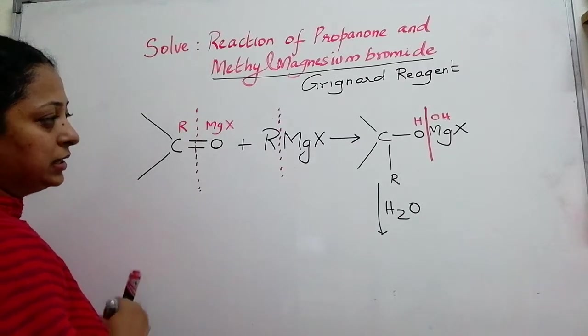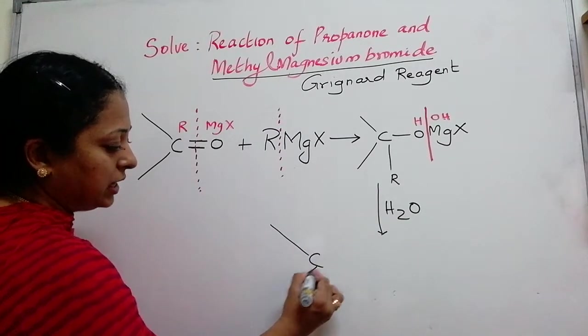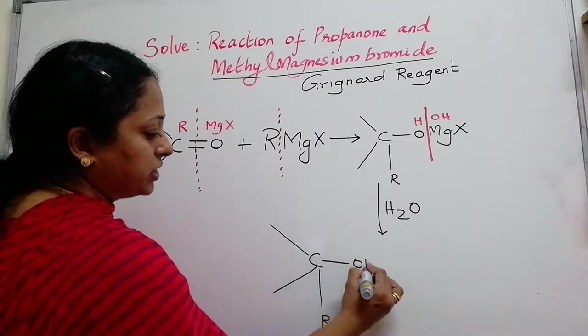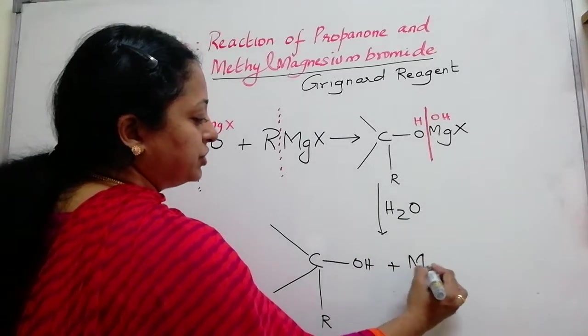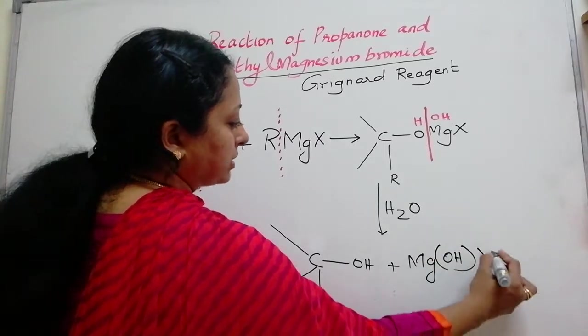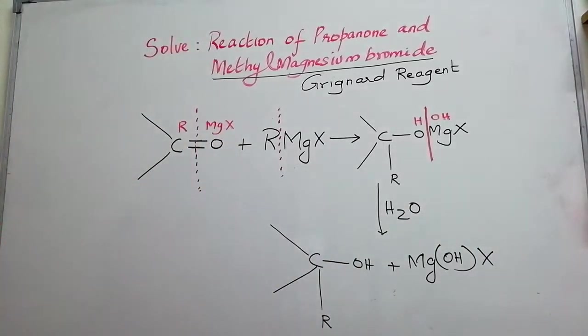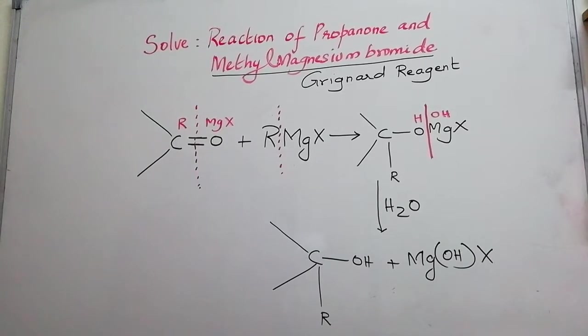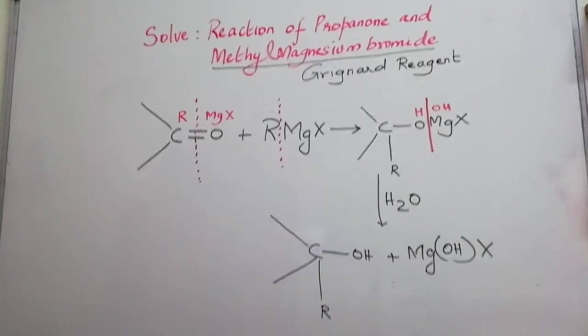So, finally, the answer will become C with R and OH plus Mg(OH)X. So, this is the general mechanism of Grignard reagent with the carbonyl group.